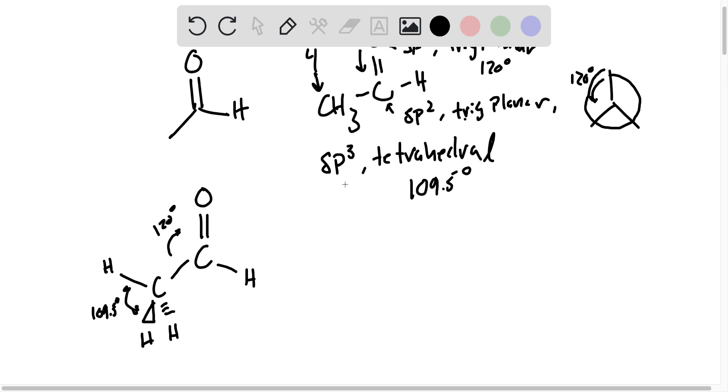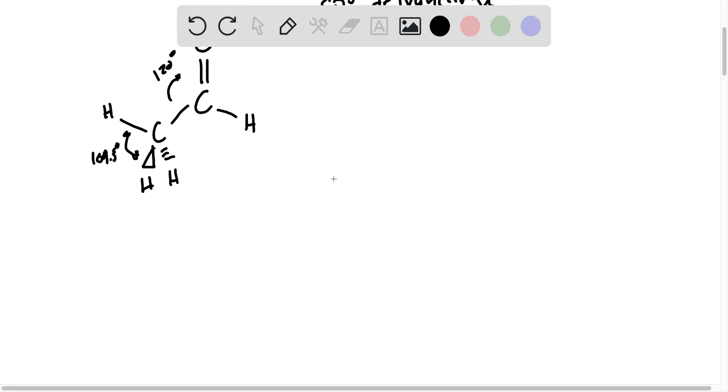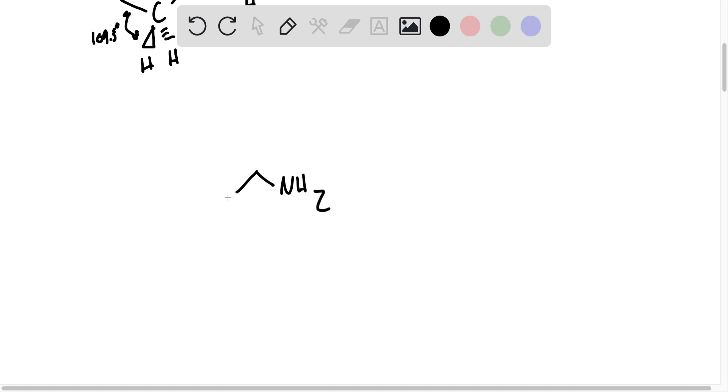Now we've got to look at ethanolamine. So we've got a CH2, CH2, and then NH2 here, and this is an OH on the end.